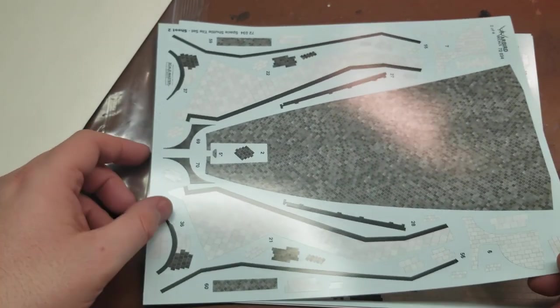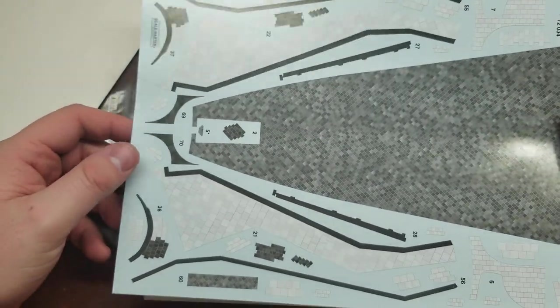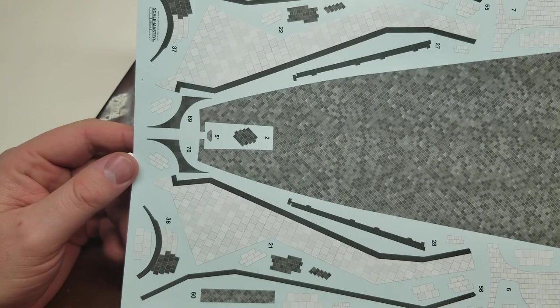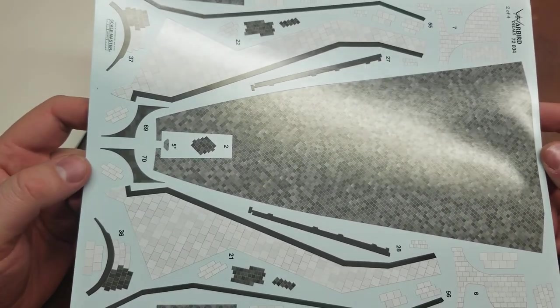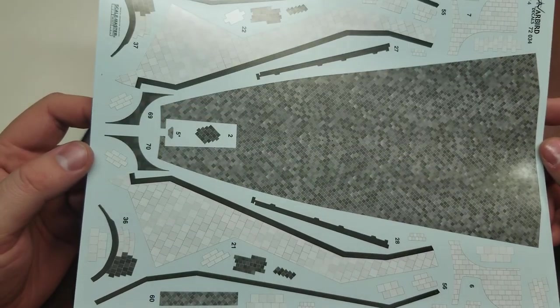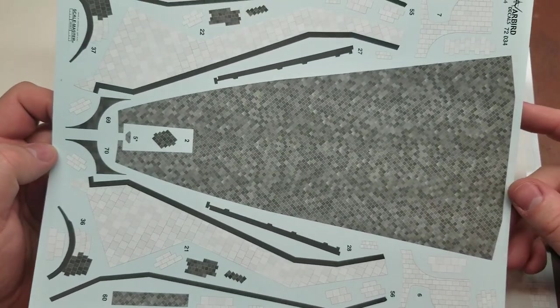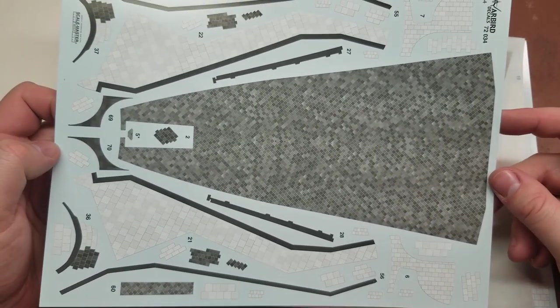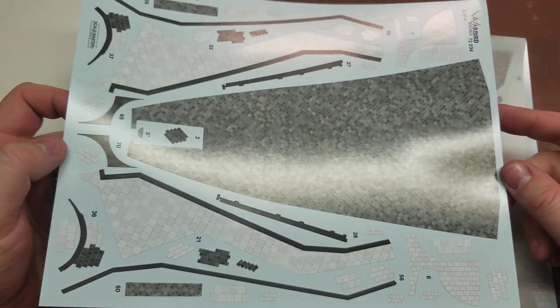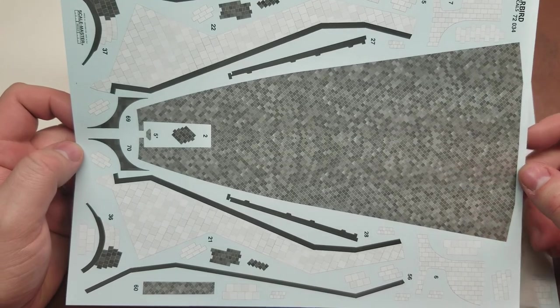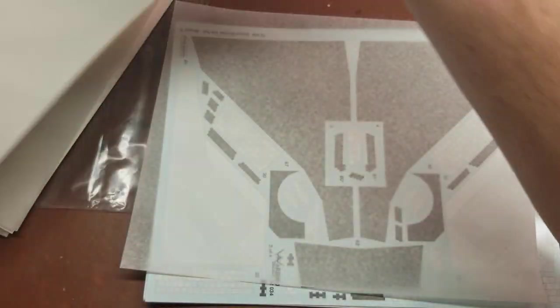Then we have the front section here. The carrier film looks like it's right up against the decals, so it should be really nice in that regard. You can catch it in the light there, you can see just how beautiful that is and again how much of a nightmare this would be to try to paint.